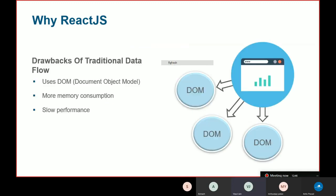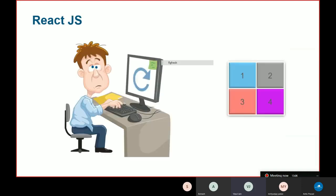What are the drawbacks of traditional data flow? It uses the DOM (Document Object Model), which has more memory consumption and slow performance. React.js solves various problems associated with this, including introducing the concept of virtual DOM.